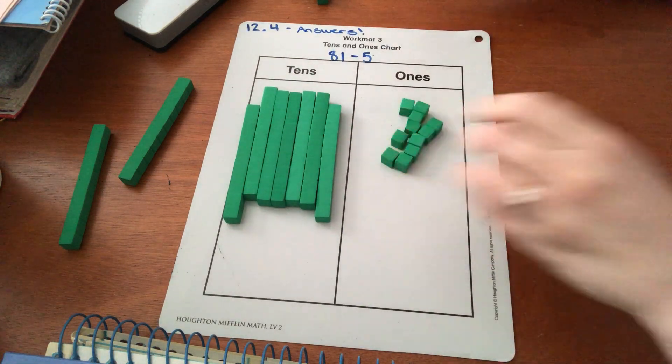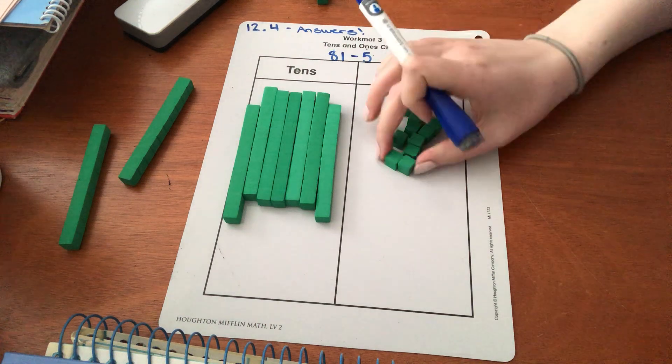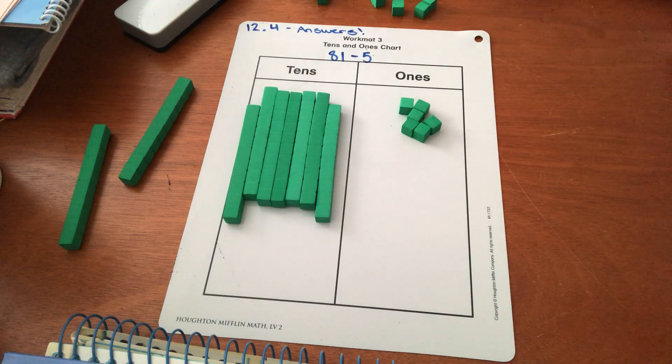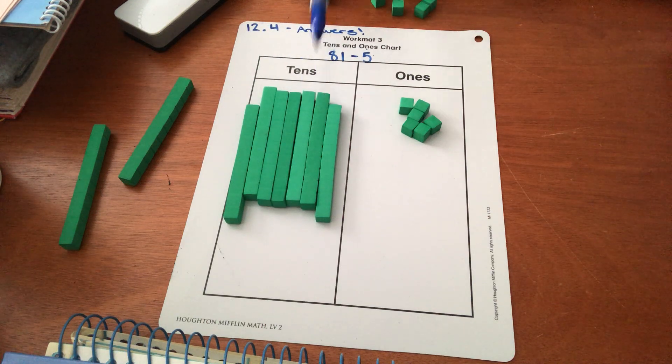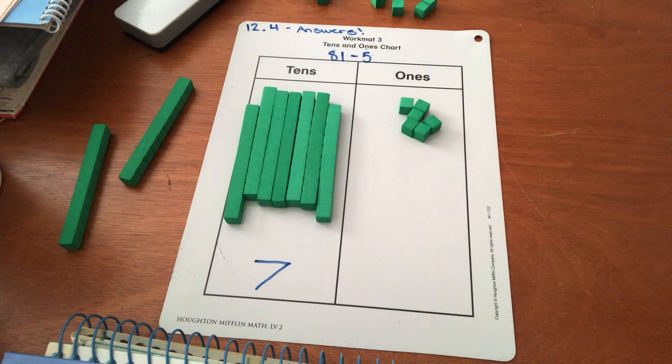So now I need to subtract the ones. I need to take away five. One, two, three, four, five. Cool. How many tens do I have here? One, two, three, four, five, six. Awesome. Just seven. Seven tens.